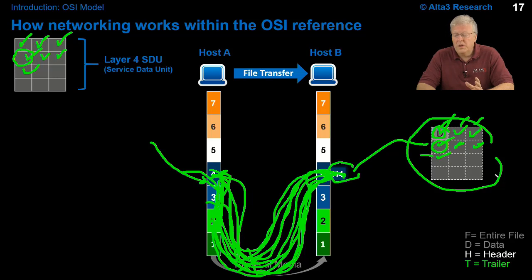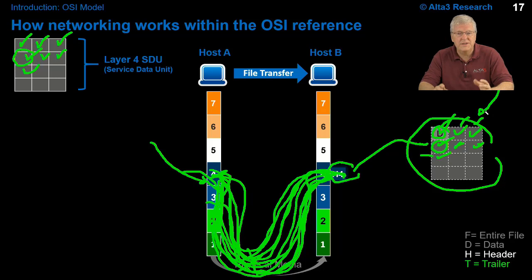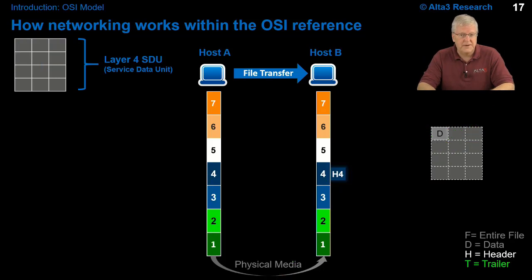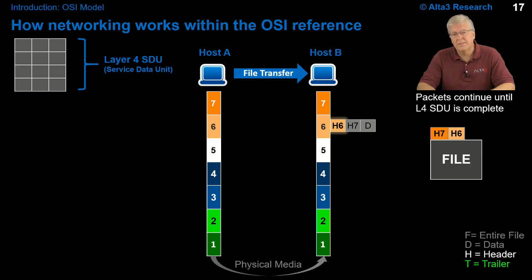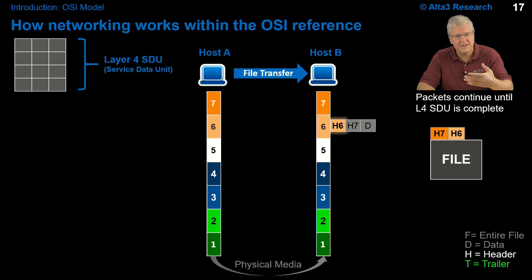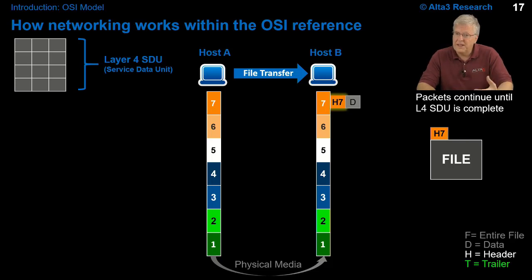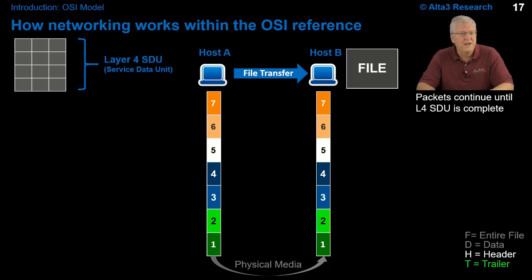Once the entire file is received and TCP has put it together, it passes the information up to layer 5. Layer 5 receives it, peels off its header, and passes it up to layer 6. Layer 6 presents the information as necessary and passes it up to the application. The application, understanding its header, peels the information off and delivers the file to the destination. And there you have it — OSI at its finest.